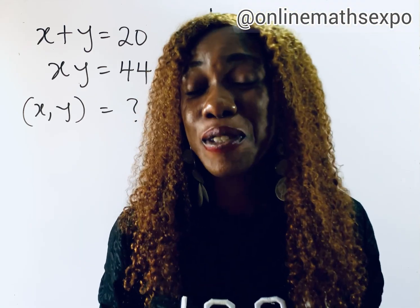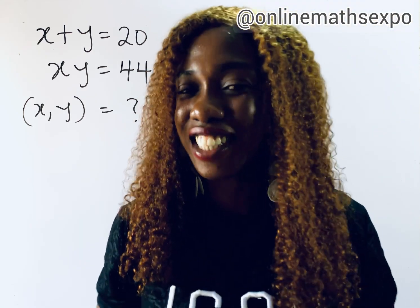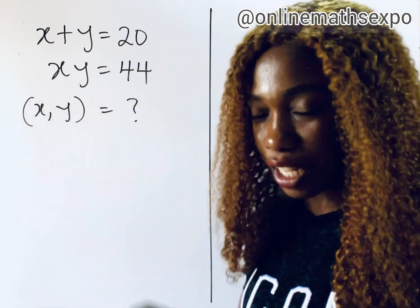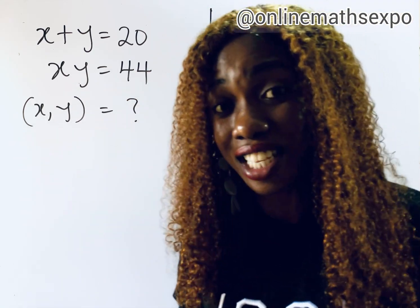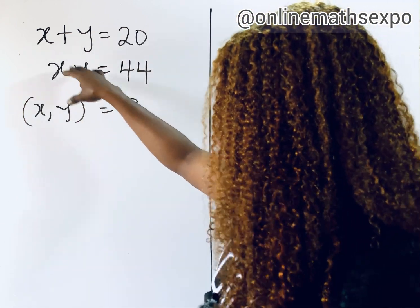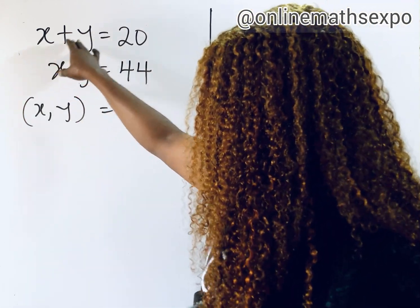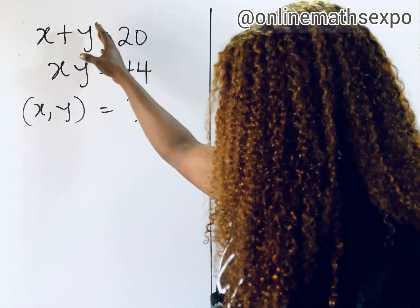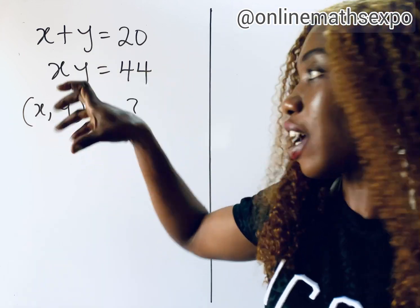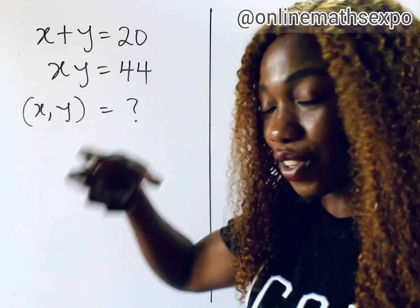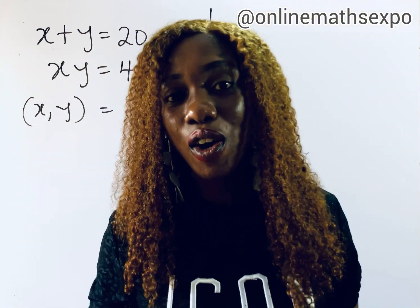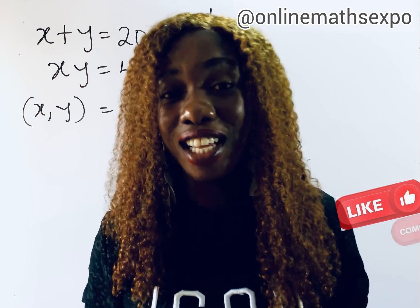Hello! In this tutorial, I'm going to learn how to solve this beautiful system of equations. This is a system of equations because we have two unknowns, two variables, and we have two equations. When you have such, it's called a system of equations or simultaneous equations.